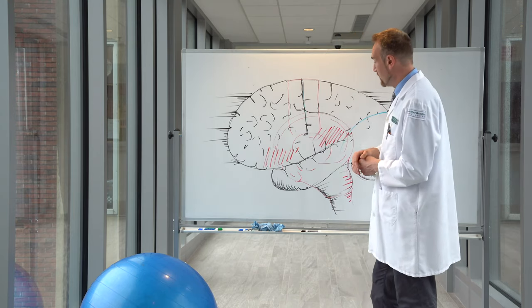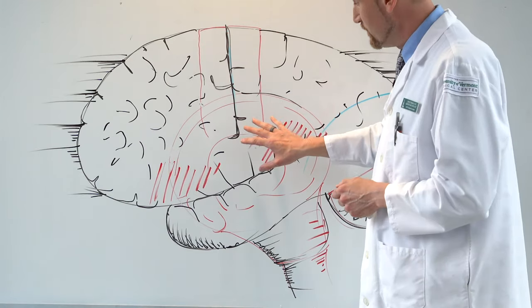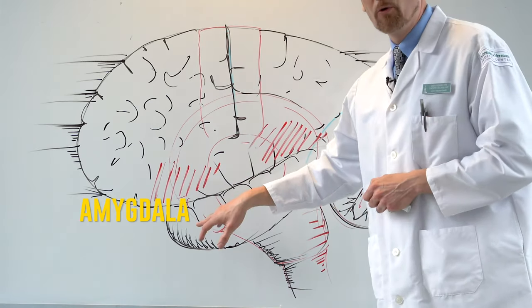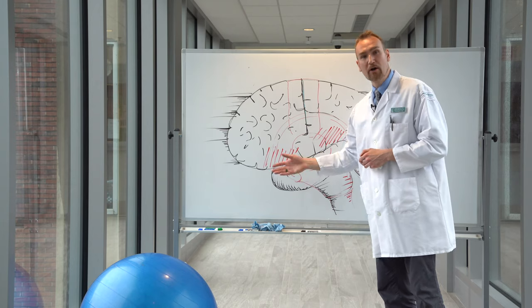And then the other part that's very interesting is the limbic system here, more specifically, the part of the brain that is responsible for the fight and flight response, our amygdala. We have two, one on each side of the brain.